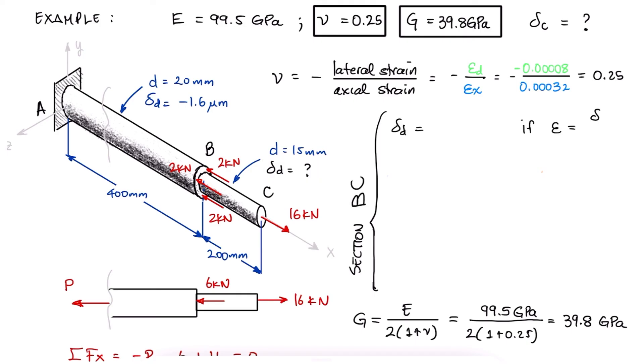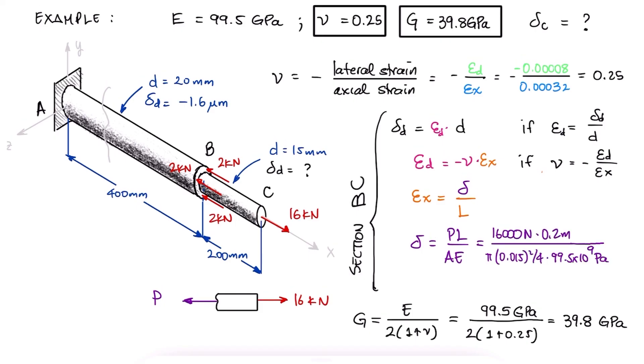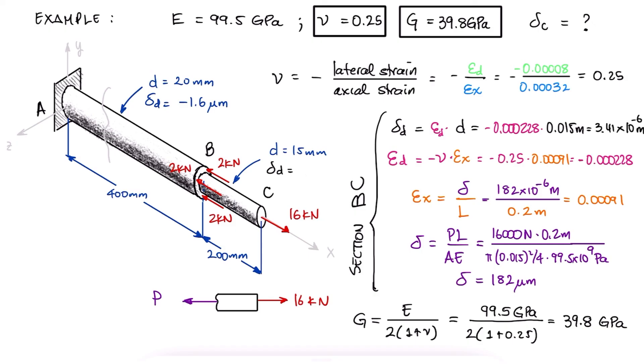To find the change in diameter of section BC, we need the strain and the original dimension. The lateral strain we can find if we have Poisson's ratio and the axial strain. And the axial strain we can calculate if we first calculate the axial deformation of member BC. A free body diagram at a cut between B and C would reveal an internal load P equal to 16 kilonewtons, which with the other dimensions of BC, allows us to find delta, the axial strain, the lateral or diametral strain, and finally the change in diameter.